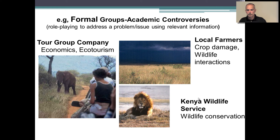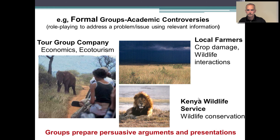Students present their findings to the class both orally, and occasionally I have students write reports or essay-type exam questions. The key outcome is individual accountability — individuals have to role-play one of these three stakeholder groups and must be able to communicate the relevant information associated with their stakeholder group.